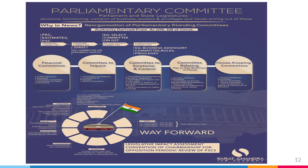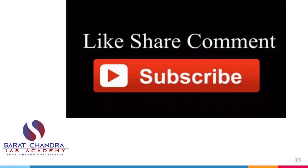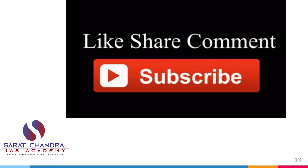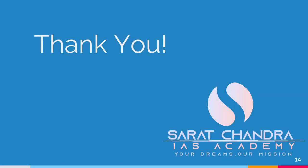Coming to this particular topic, this is the infograph that our academy is introducing for the first time. Under this infograph, you can see all the content displayed on one particular page — why it is in news, what committees are there, and a flowchart covering challenges, positives, membership, chairmanship, working, and way forward. You can download this PDF or PPT from the description box below. If you have any doubts, share them in the comment section. Please like, share, comment, and subscribe to our channel to get more videos. Thanks a lot for attending the session everyone — we will meet with another topic tomorrow.